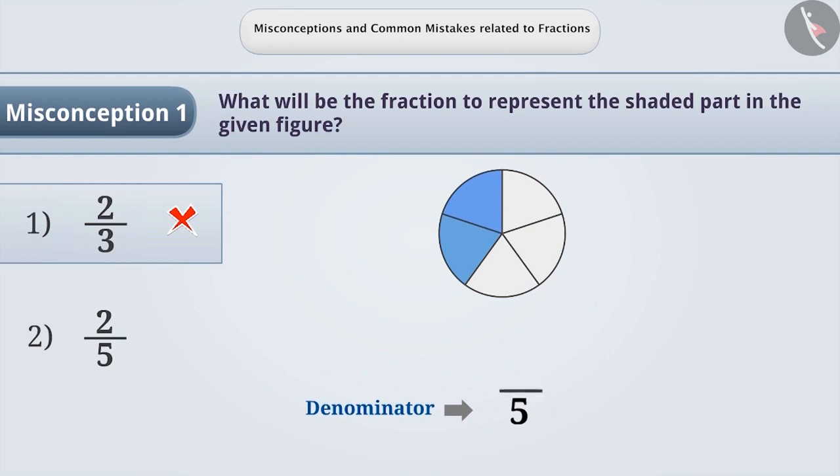In this case, 5 is the denominator. Similarly, numerator is the number of parts taken. Here, number of shaded parts is 2. This means 2 out of total 5 parts are considered. Therefore, the numerator is 2.